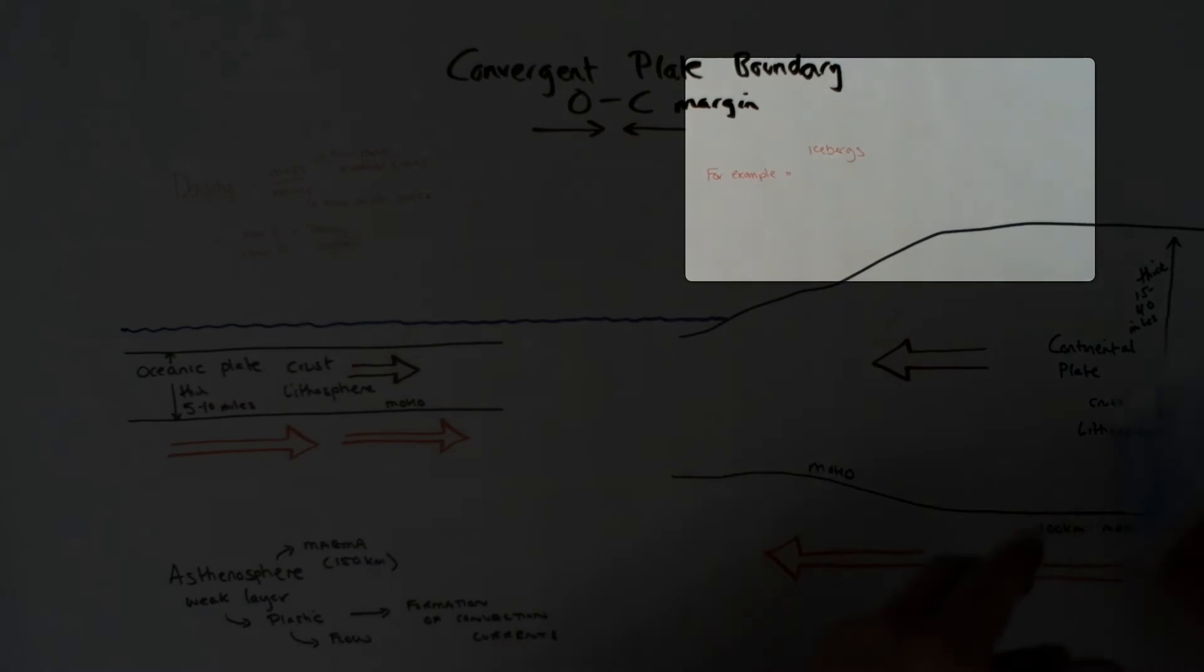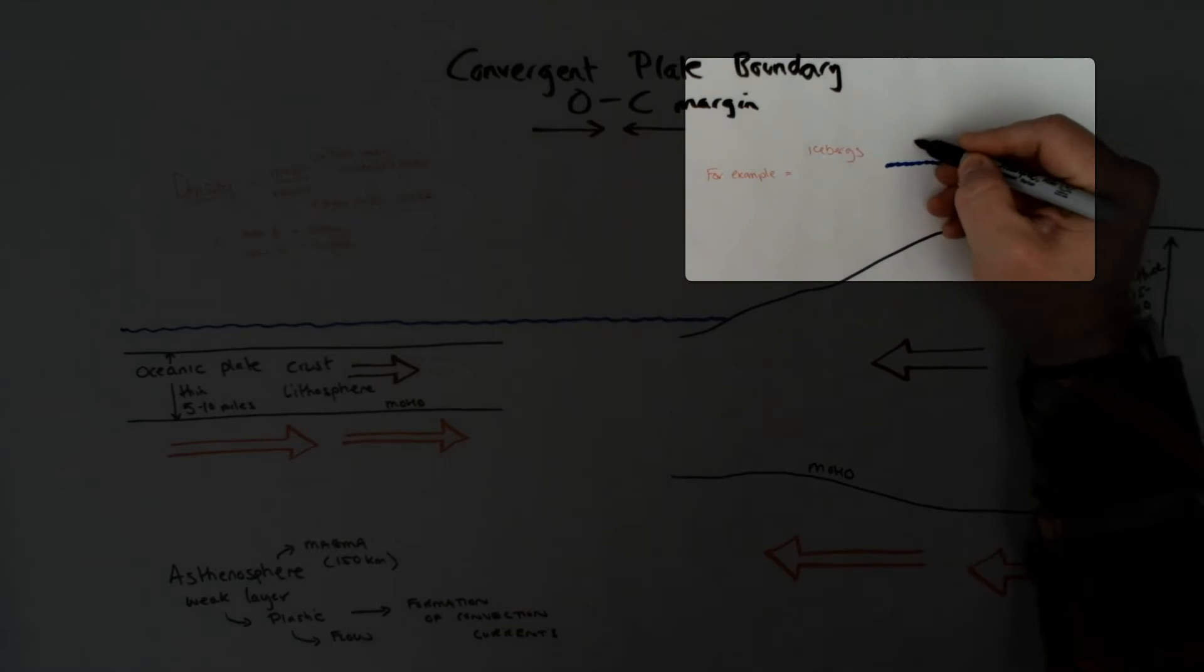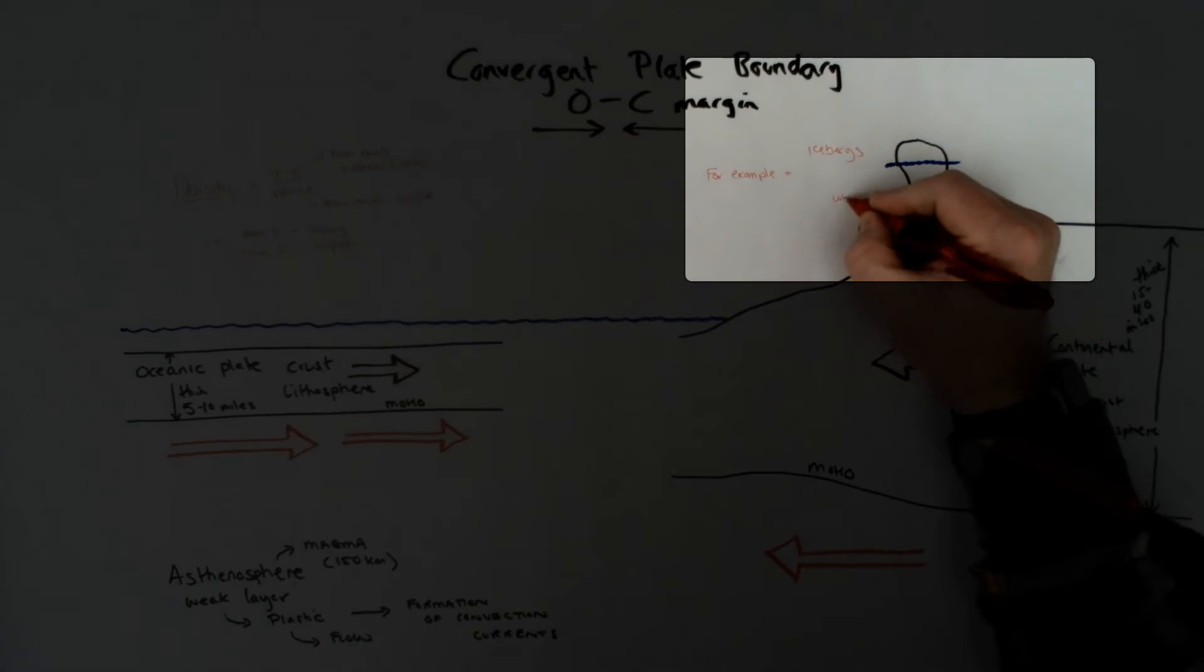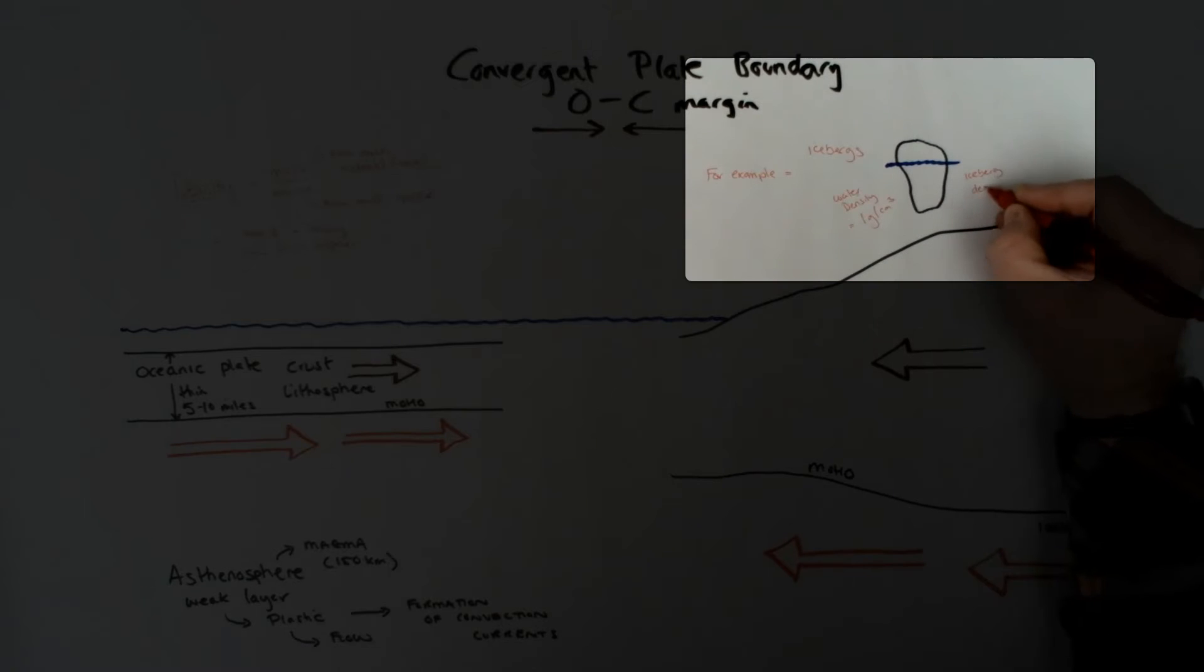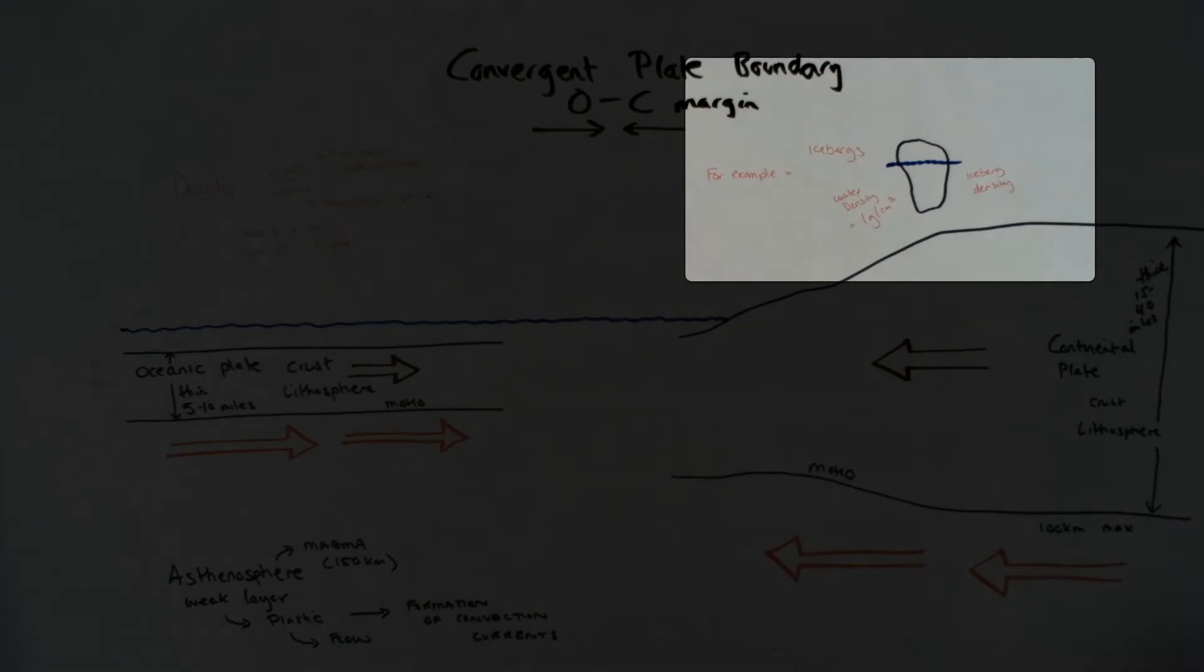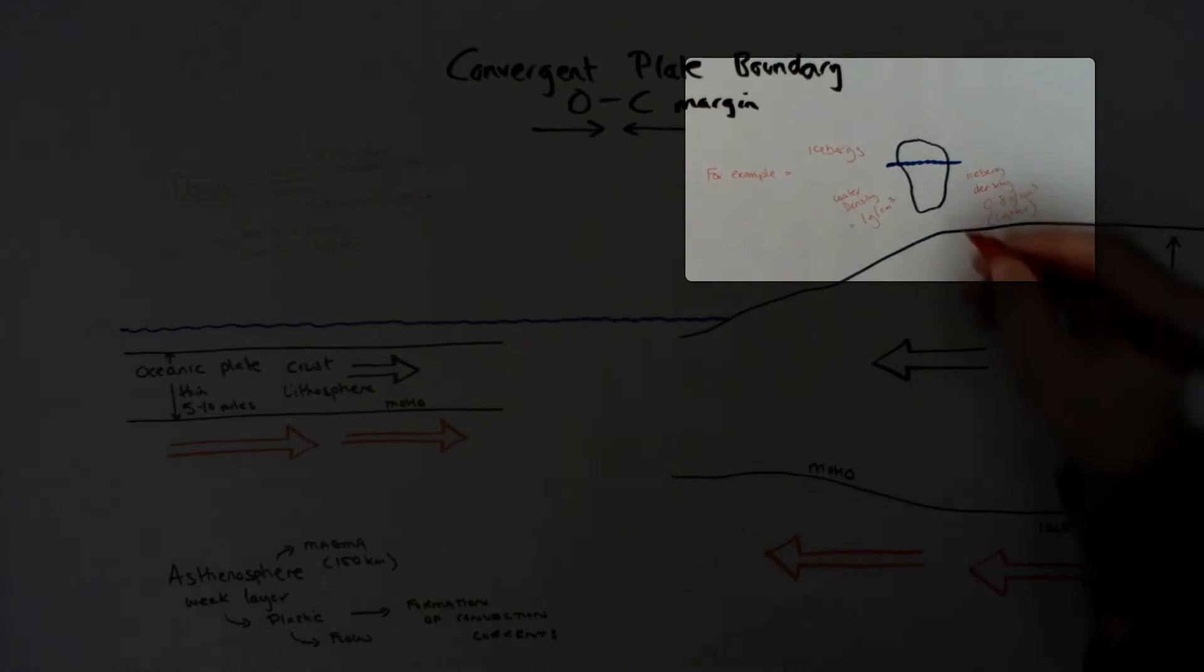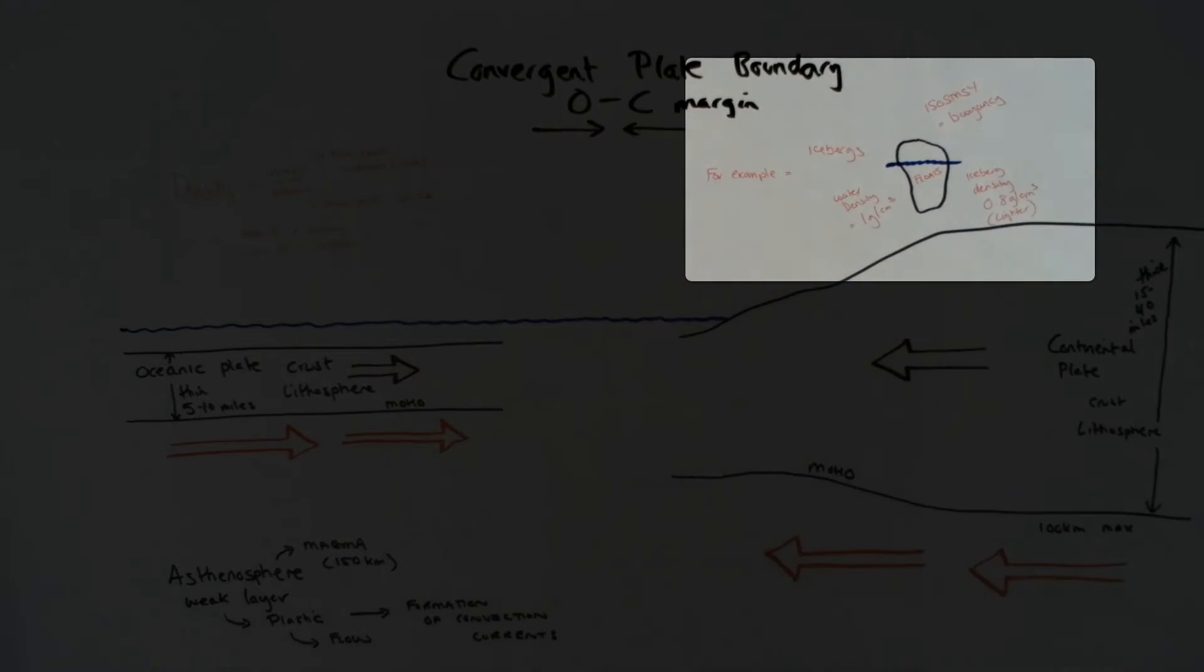An example of density I use in class is the iceberg in water. Water is one gram per centimeter cubed, which is its density. The iceberg, because it floats, is less—it's 0.8 or 0.85. This allows the iceberg, even though it's a large piece of ice and weighs a lot of tonnage, to float because it is less dense than water. Great example to use in class.